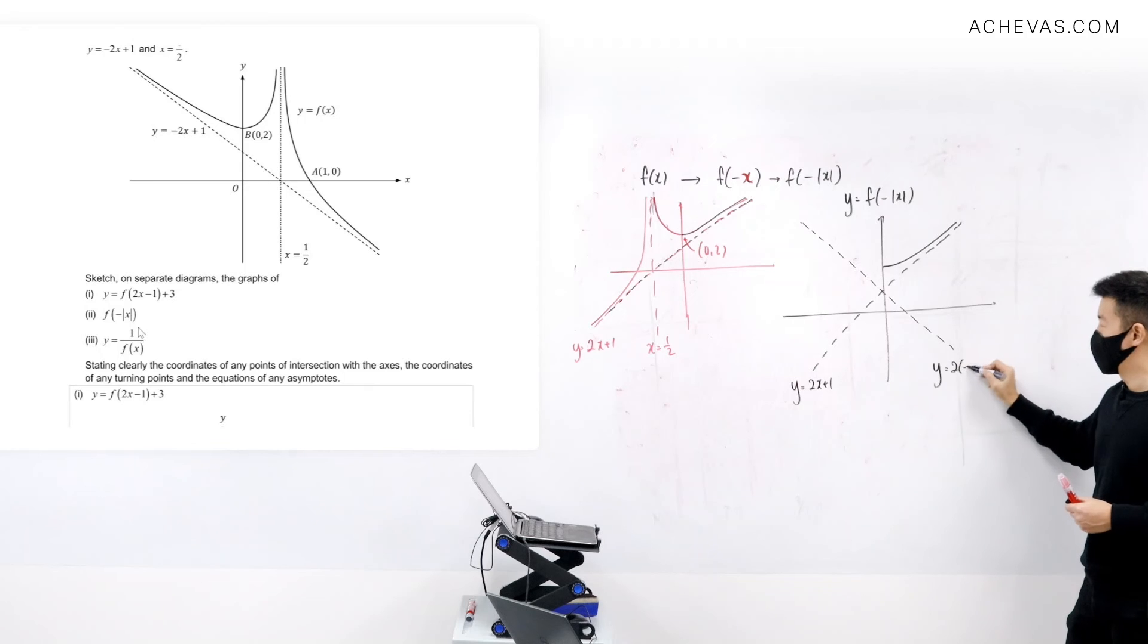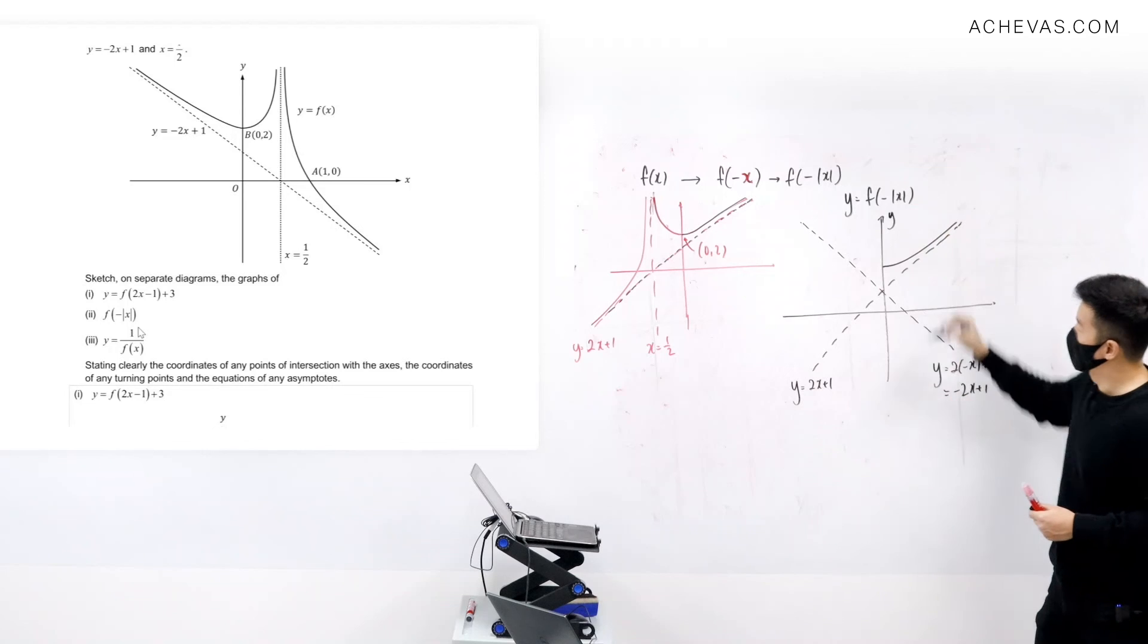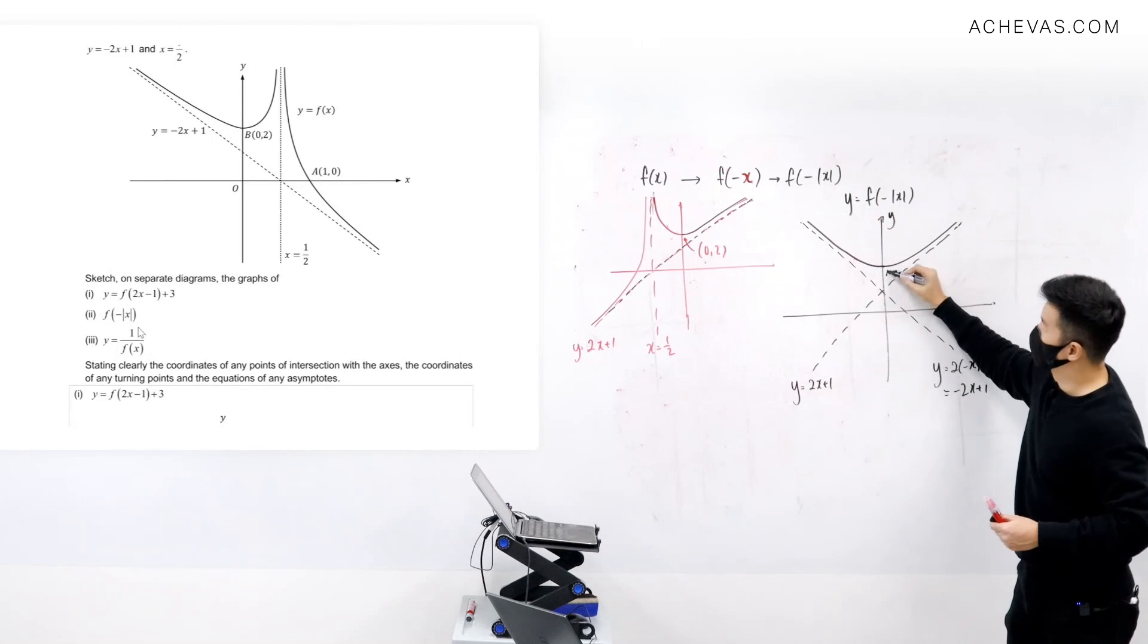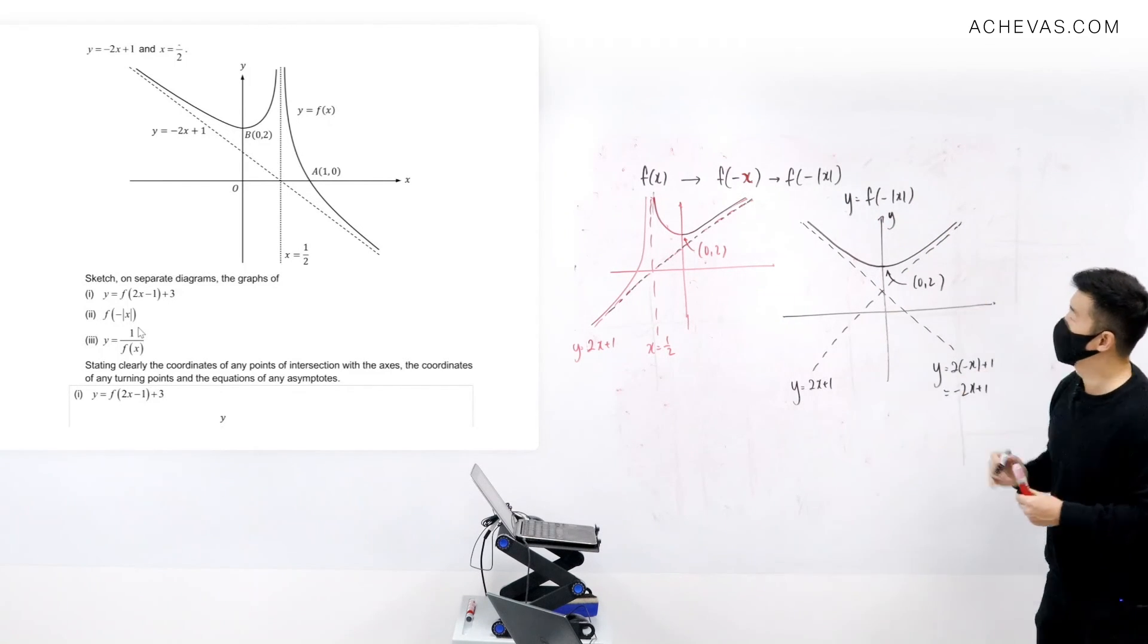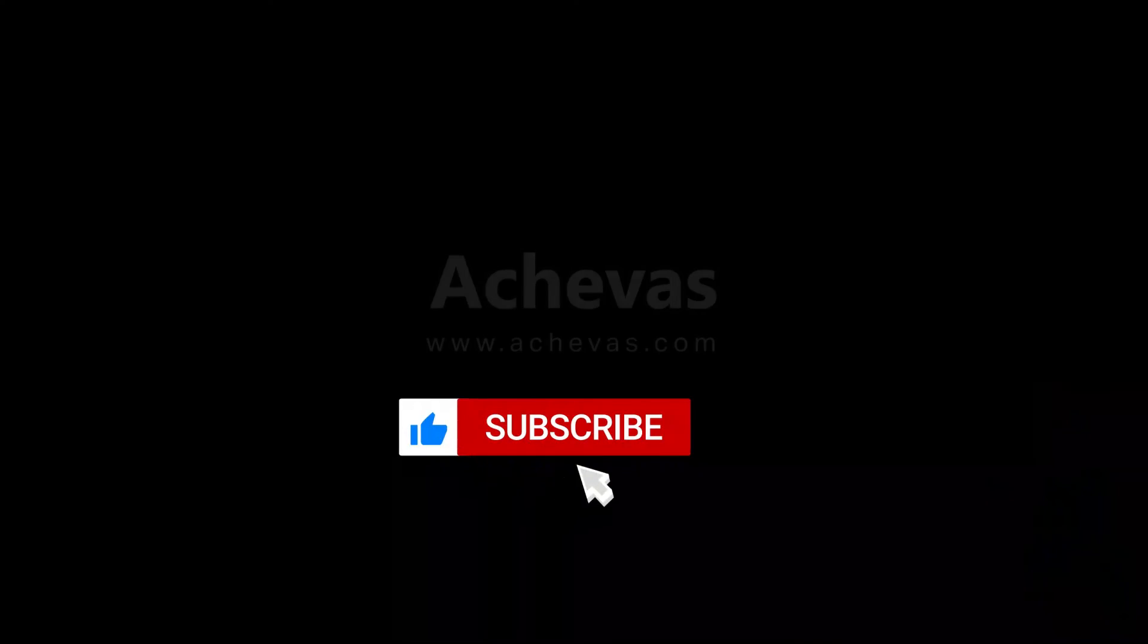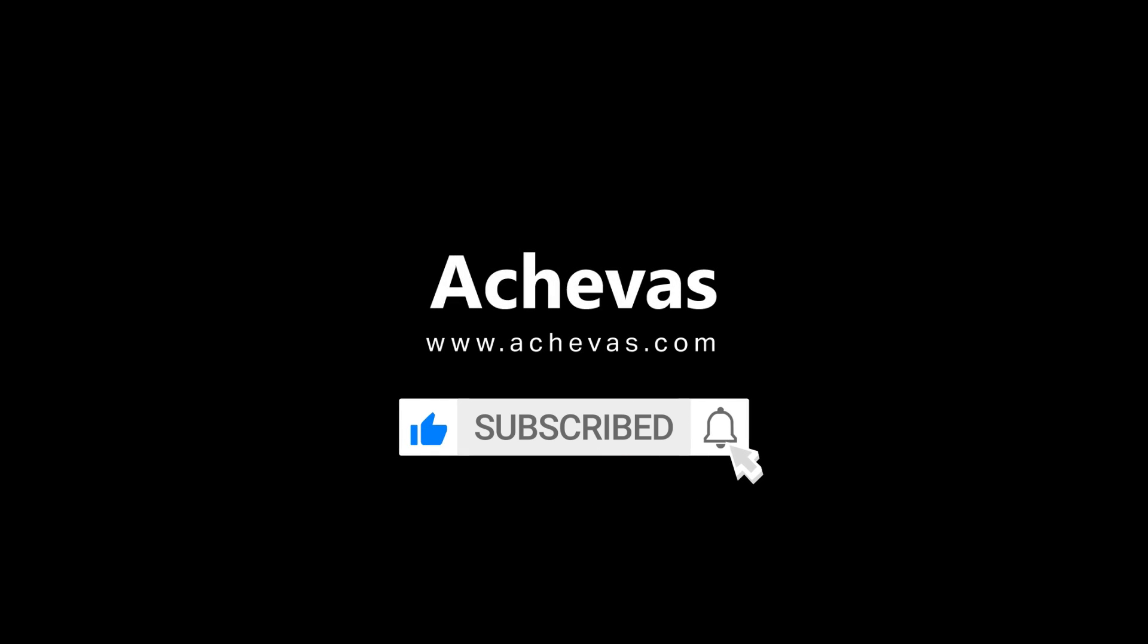This will be y equals 2(-x) plus 1, which is -2x plus 1, because I reflected it about the y-axis. And this will be at a point (0, 2).